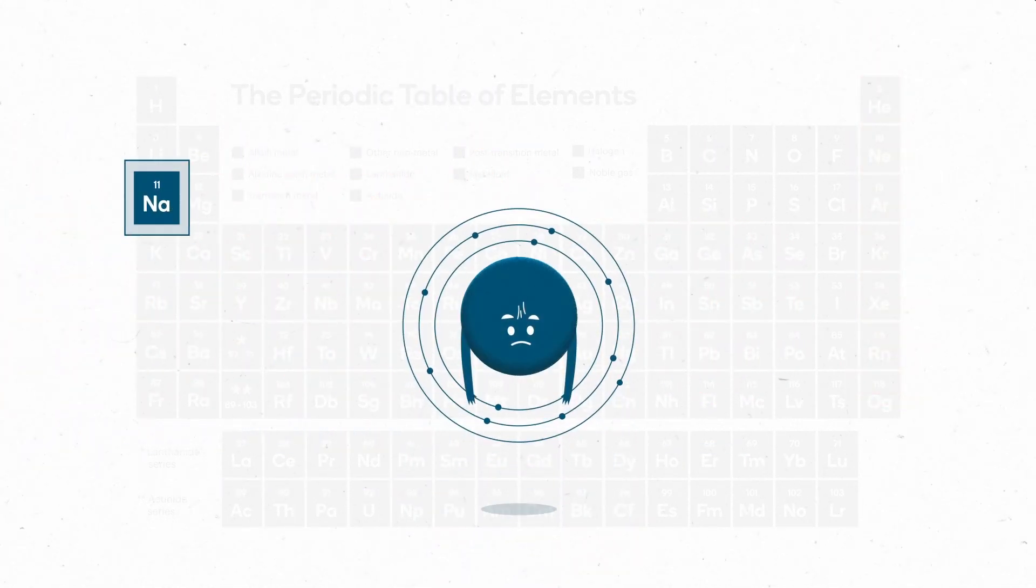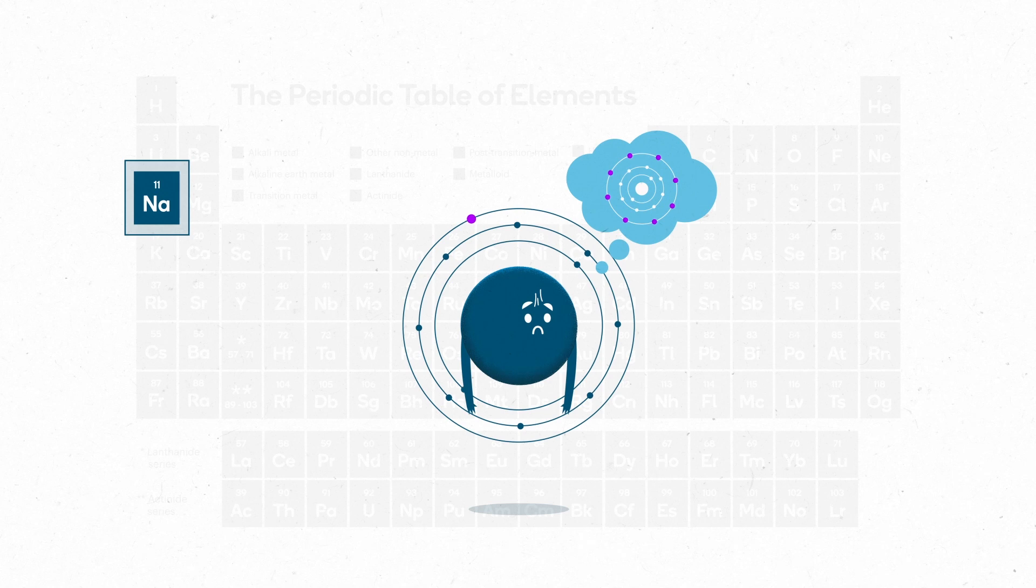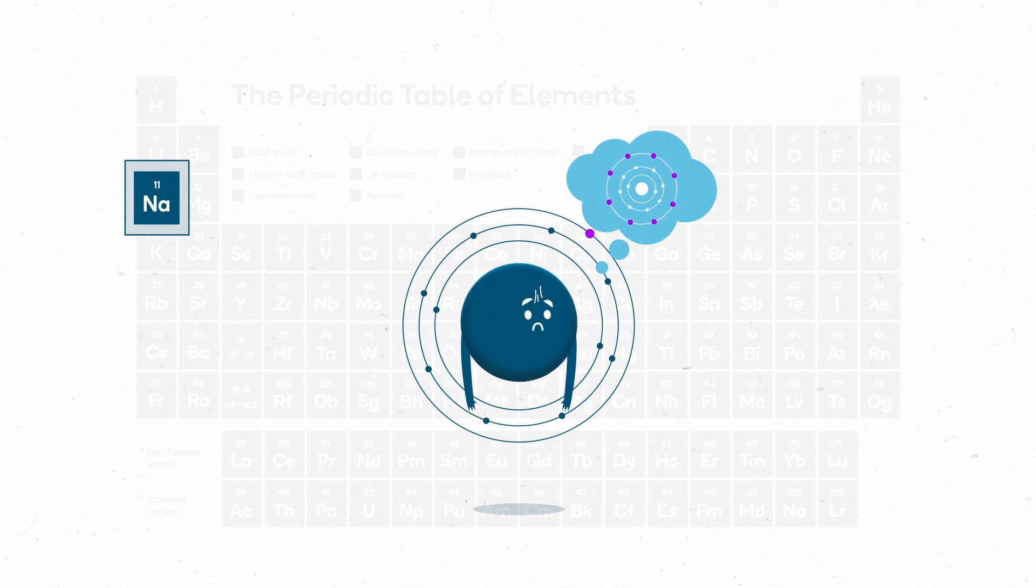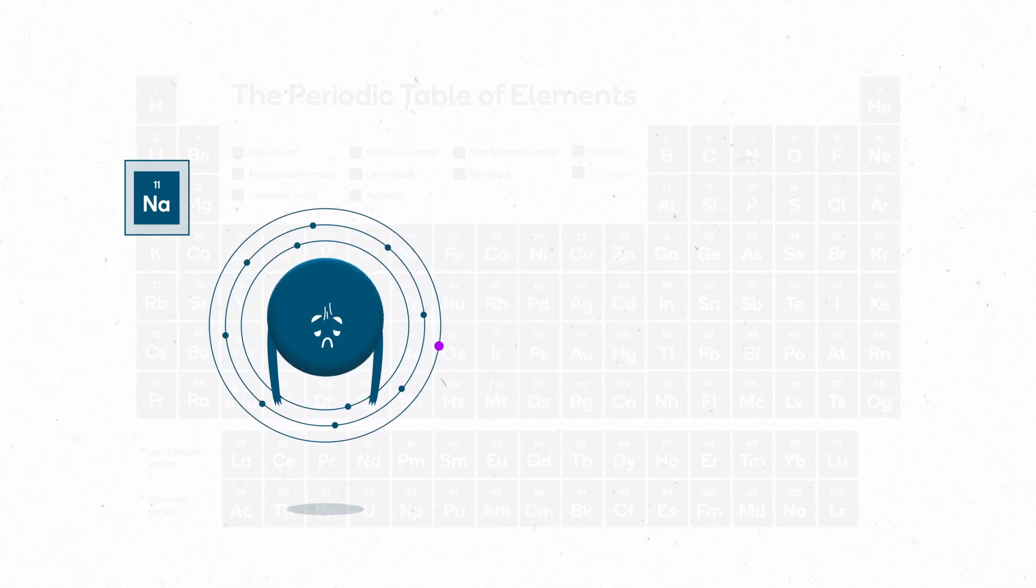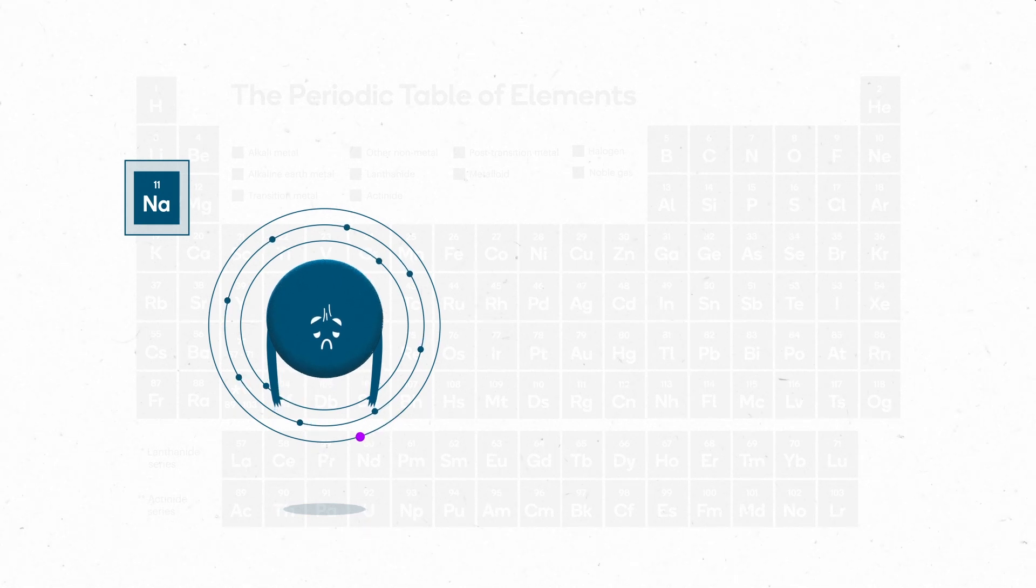In contrast to neon, sodium has one electron sitting in a valence shell all by itself. According to the rule of thumb, it wants to have a full valence shell, so this lonely valence electron won't do. A sodium atom can get rid of this electron by a chemical reaction.